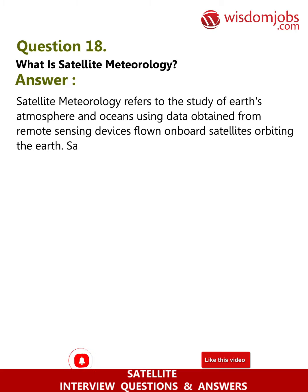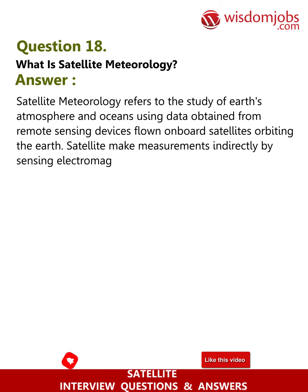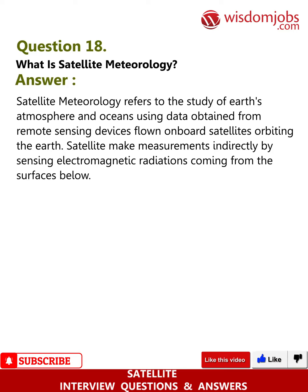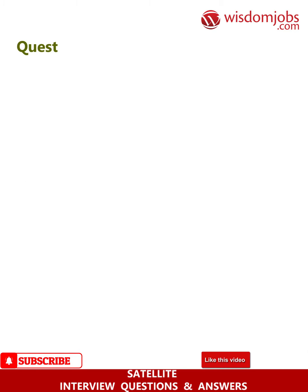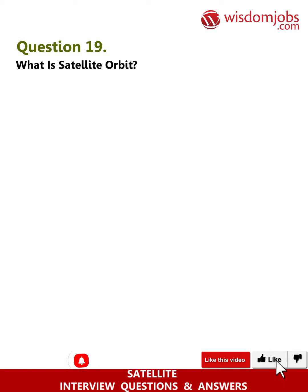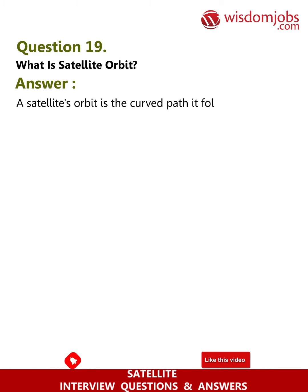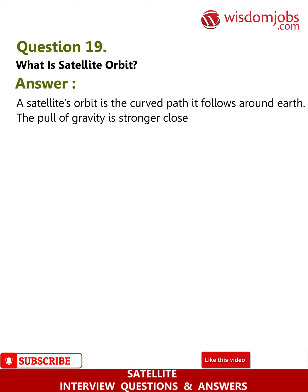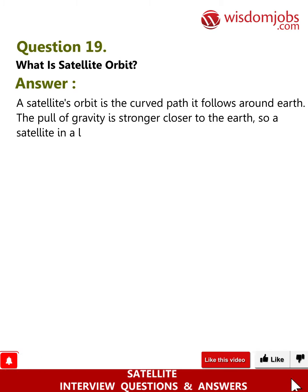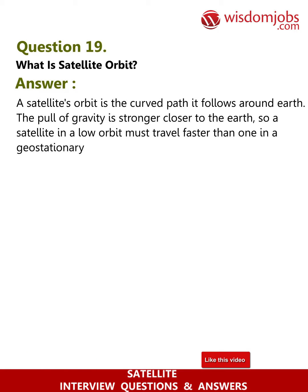Question 19: What is a satellite orbit? A satellite's orbit is the curved path it follows around the earth. The pull of gravity is stronger closer to the earth, so a satellite in a low orbit must travel faster than one in a geostationary orbit.